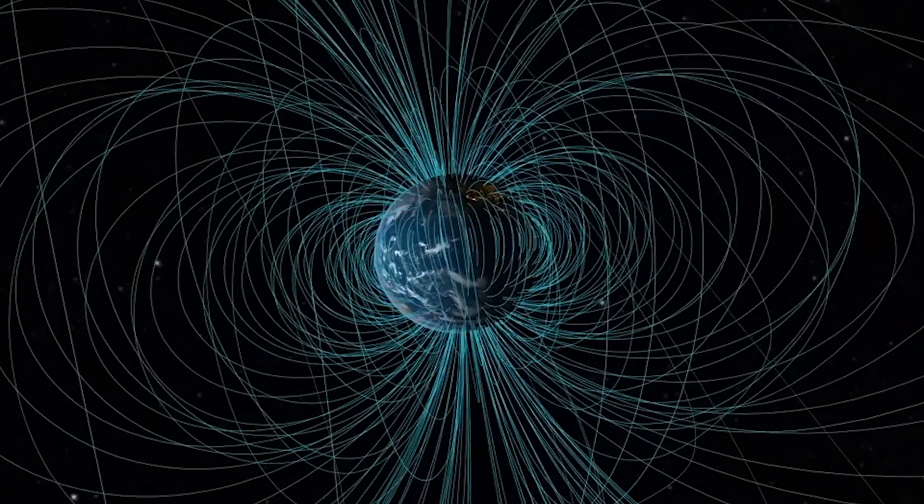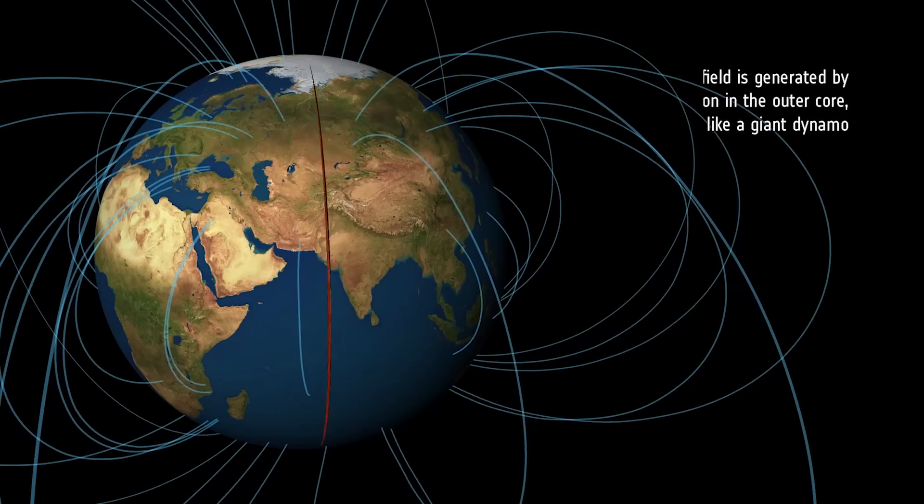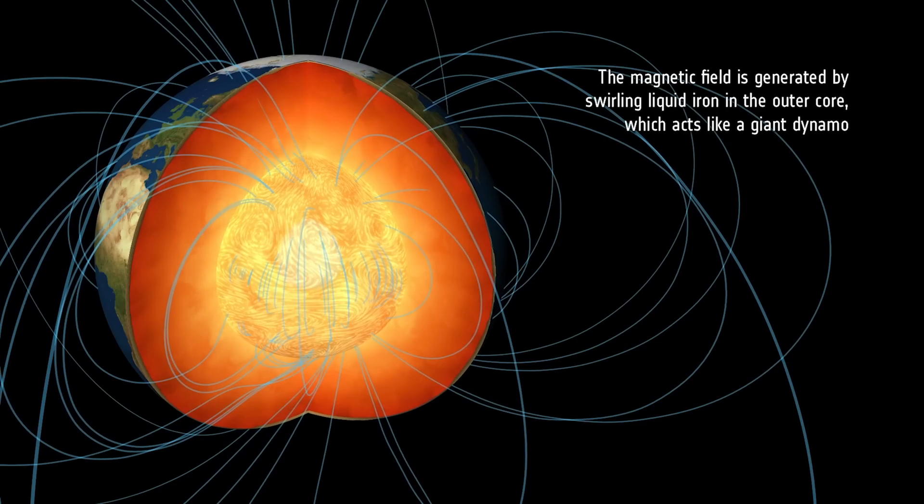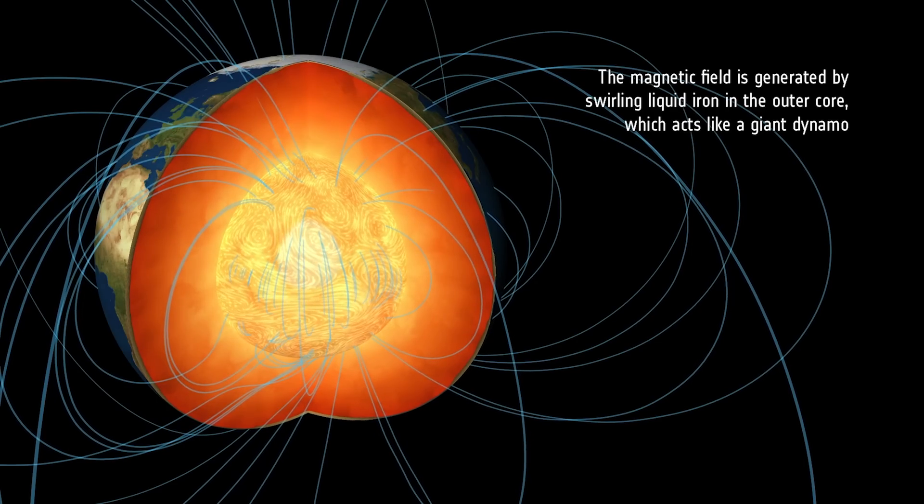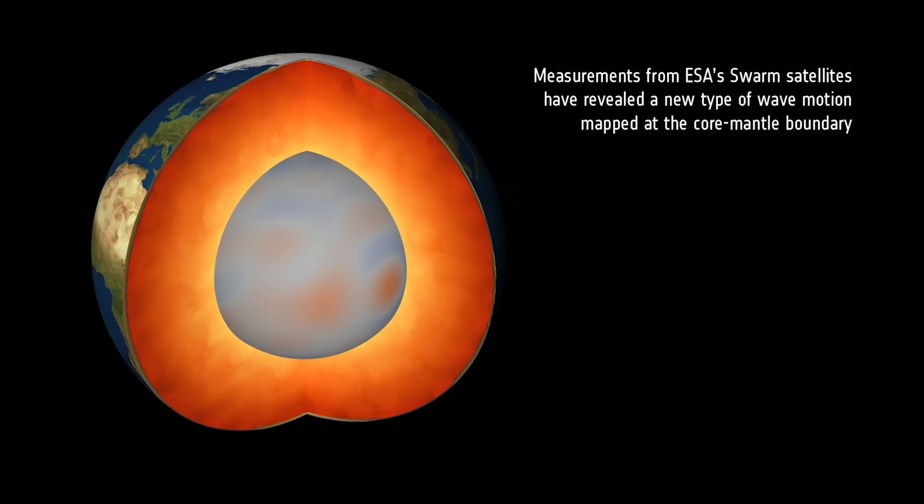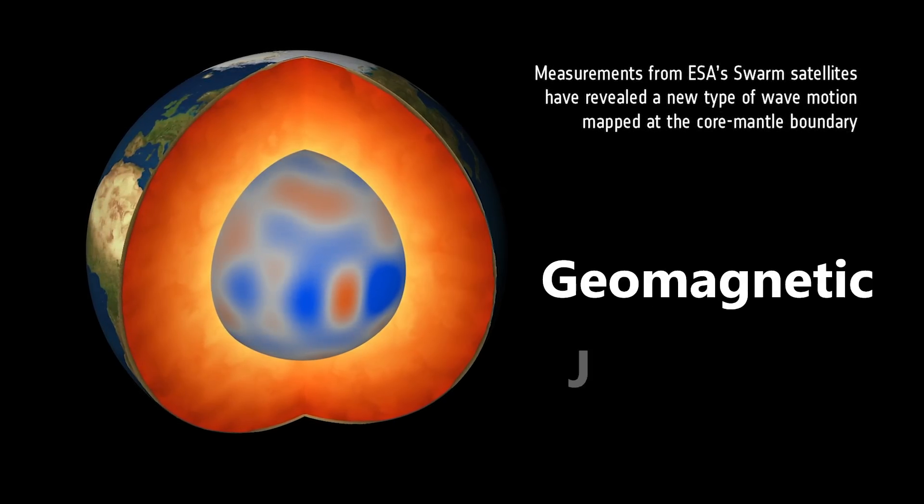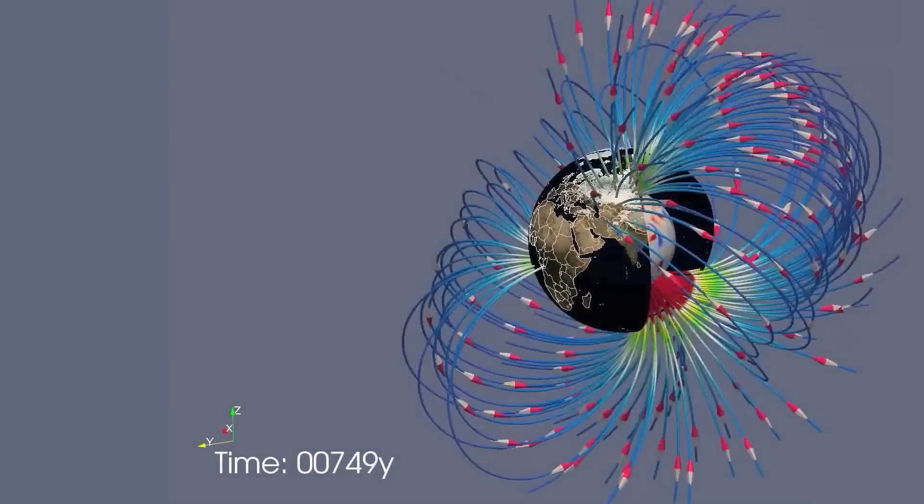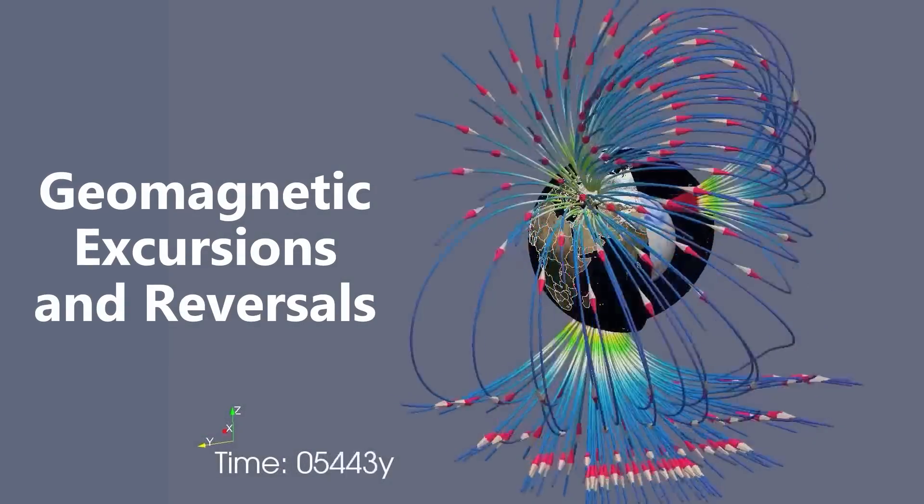Earth's magnetic field does change across space and time, but in general, the field is relatively stable because the extremely powerful direct currents of charge that generate it deep within the Earth are fairly stable themselves. There have been variations in Earth's magnetic field, some subtle, some highly significant, across geologic time.